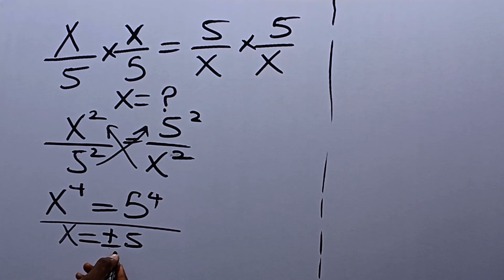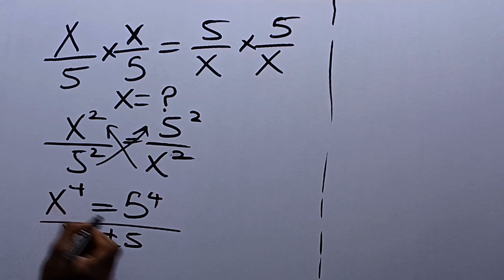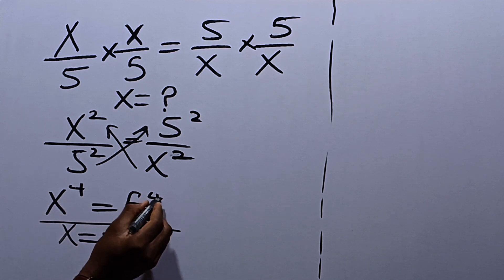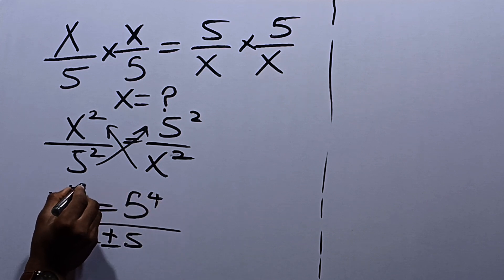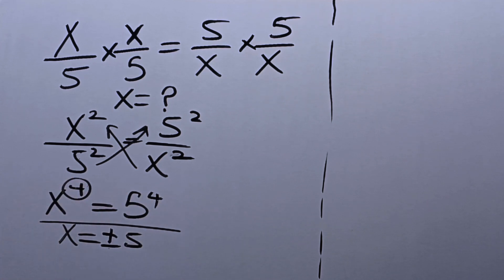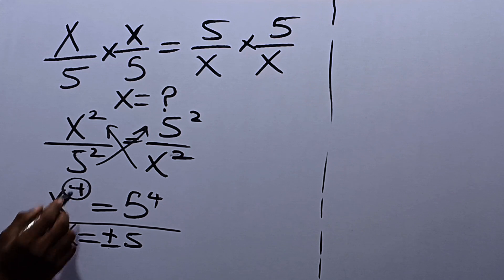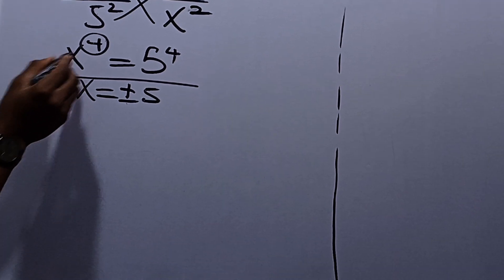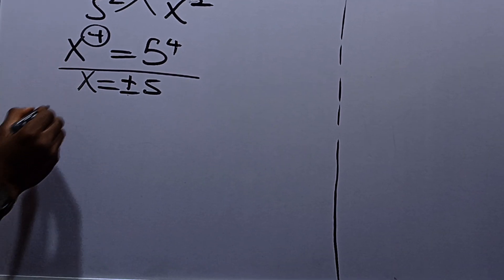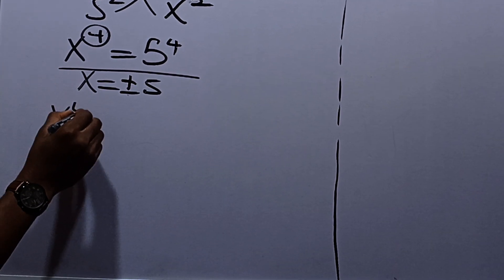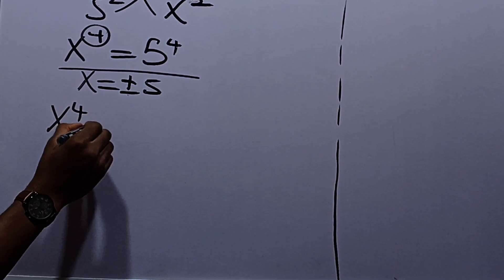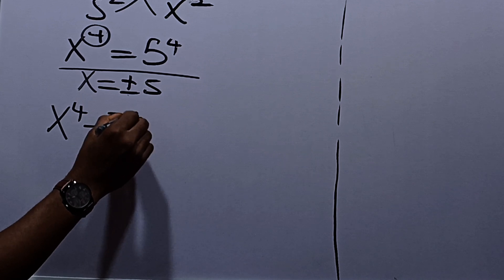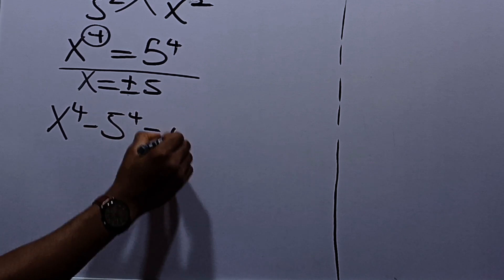But then, watching closely, you see that the number of answers for x is supposed to be equal to the highest power of x. The highest power of x is 4, and we only have two answers so far. So let's find the remaining two answers. We can write x raised to power 4 minus 5 raised to power 4 is equal to 0.